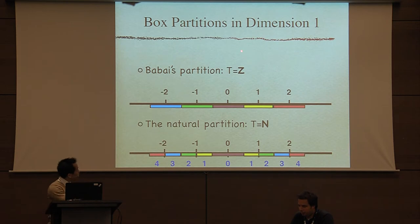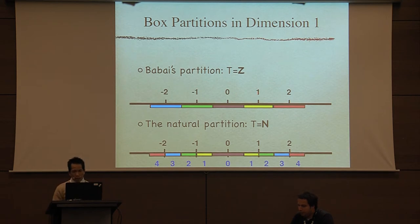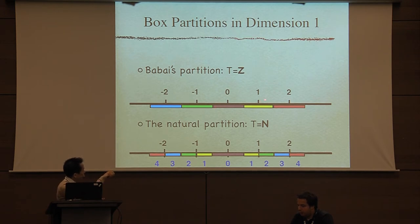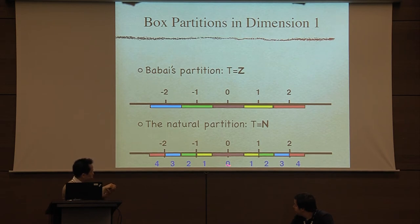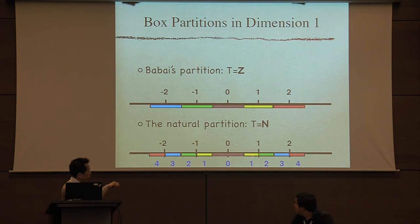Consider dimension one. The lattice is just a multiple of some vector. The most natural way to partition the line so each cell contains exactly one lattice point is to round: the zero cell, the one cell, the minus-one cell — that's the one-dimensional Babai partition. But you can also use the natural partition with integers: zero, one, two, three. Note it's not connected anymore, and you have to break ties carefully so that boundary points belong to exactly one cell.